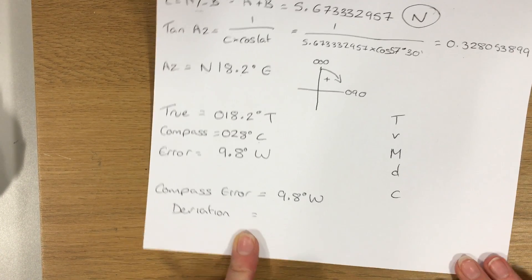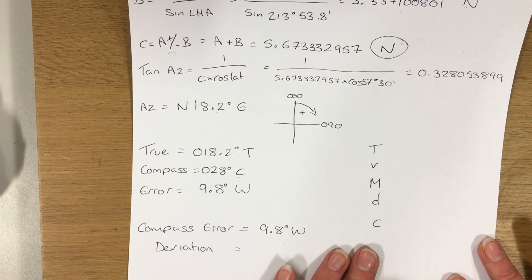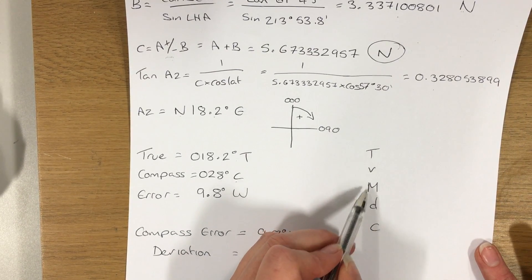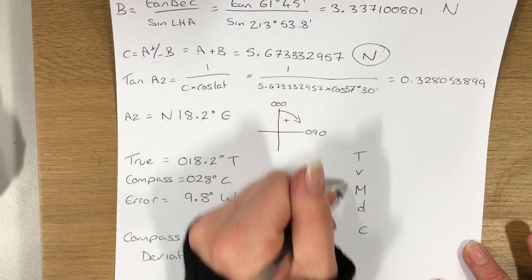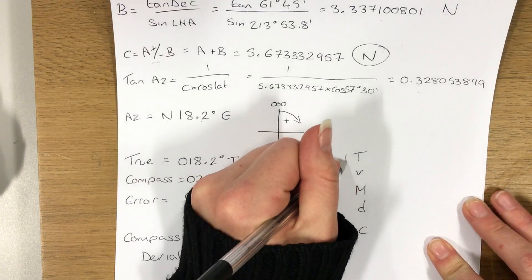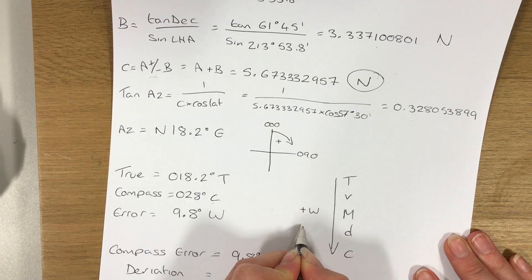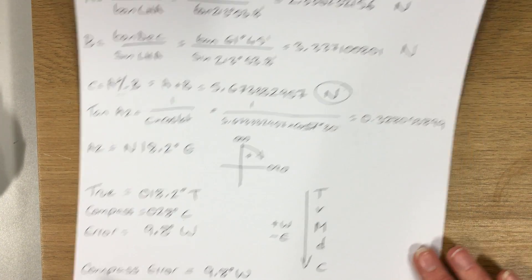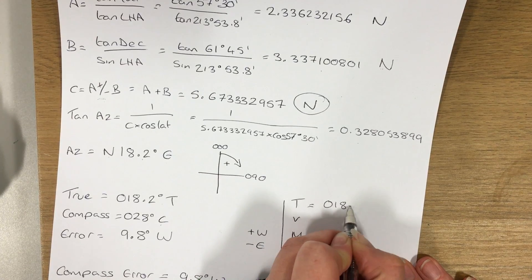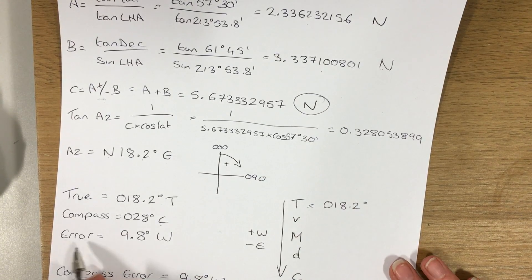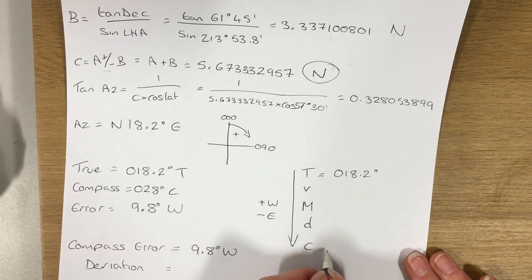So now all I need to find is my deviation. Now you don't have to do this this way, but I find this is the easiest through TVMDC. If you're working from T, which is true, to C, which is compass, you're working down in that direction. We're going to add westerly values and minus easterly values. So the true bearing, which I've calculated, 018.2, and my compass, which was given to me, 028.